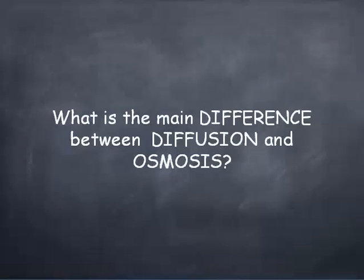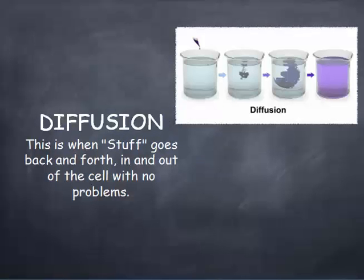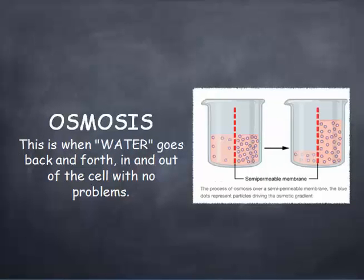What is the main difference between diffusion and osmosis? Really, they are pretty much the same thing. Diffusion is when stuff goes back and forth in and out of the cell with no problems — basically anything that's small enough to go back and forth freely that the cell membrane will allow. Osmosis is basically going to be the same thing, but this is when water goes back and forth in and out of the cell with no problem. So diffusion is anything else; osmosis is simply water. And remember that's going to be going from high concentration to low concentration.